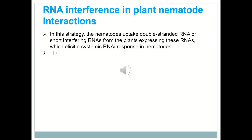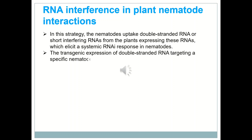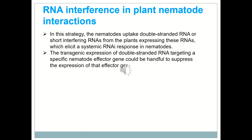The transgenic expression of double-stranded RNA targeting a specific nematode effector gene could be a powerful tool to suppress the expression of that effector gene, which is crucial for the infection process.